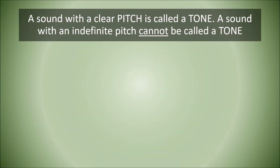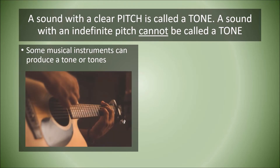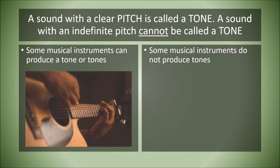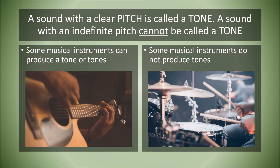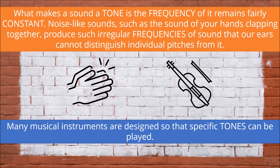A sound with a clear pitch is called a tone. A sound with an indefinite pitch cannot be called a tone. Some musical instruments can produce a tone or tones, while some do not. What makes a sound a tone is when the frequency remains fairly constant. Noise-like sounds such as the sound of your hands clapping together produce such irregular frequencies that our ears cannot distinguish individual pitches from them.